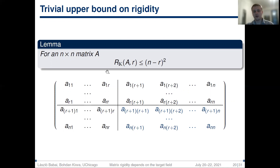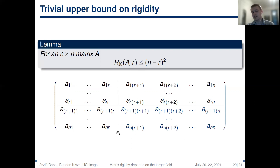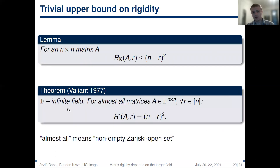Note that any n-by-n matrix A for target rank r has rigidity at most (n − r)². This is because if A already has rank less than r, no changes are needed. Otherwise, there exists a nonsingular r-by-r minor — which we can assume is the top-left minor — and by changing entries in the bottom-right (n − r)-by-(n − r) submatrix, we can get a matrix of rank r. Valiant showed that almost all matrices over an infinite field achieve this trivial upper bound.